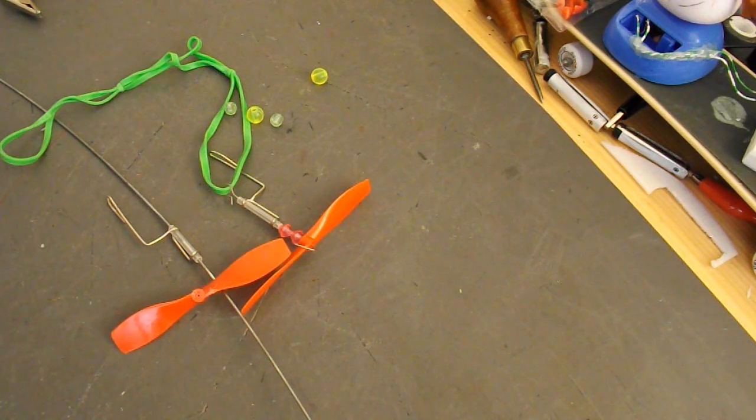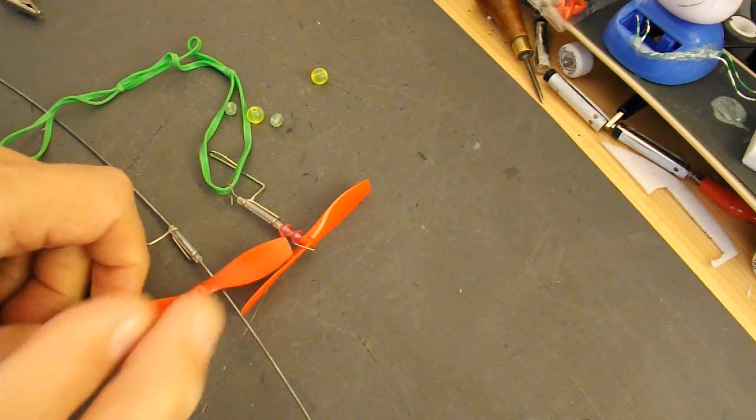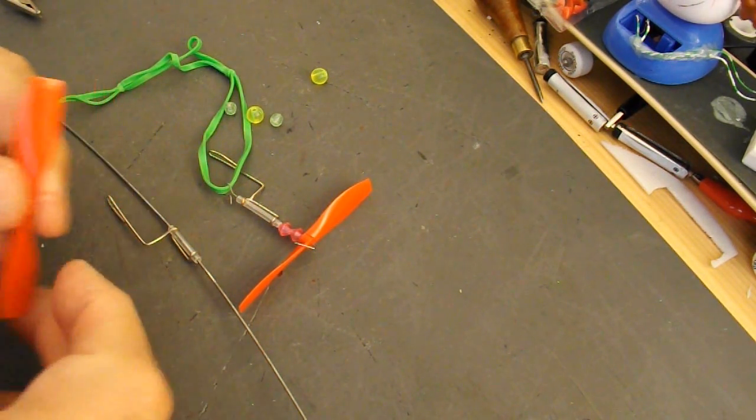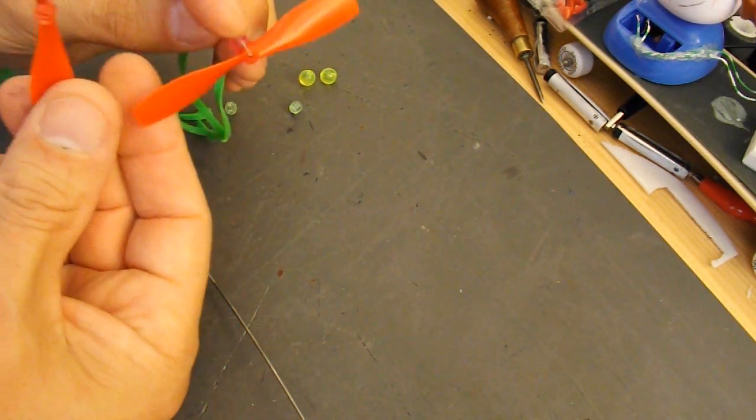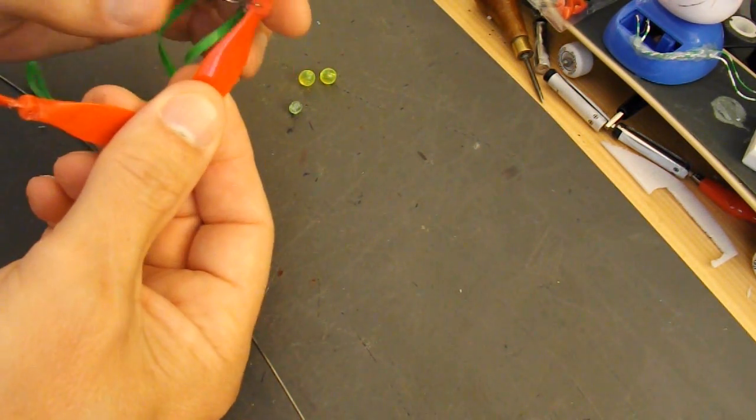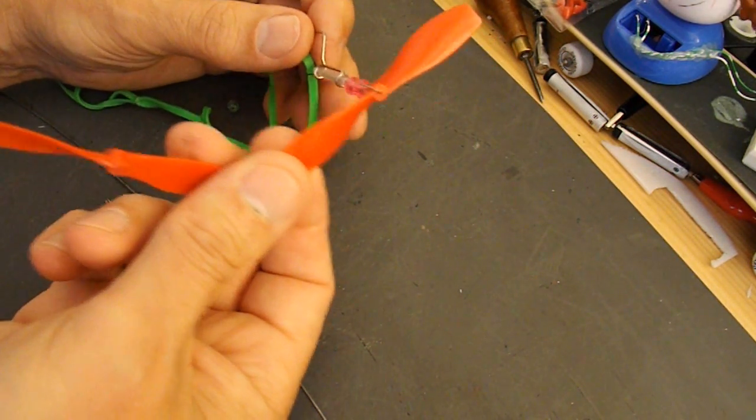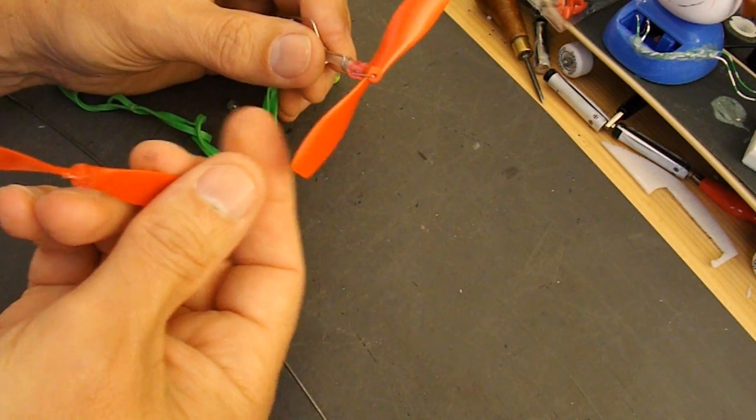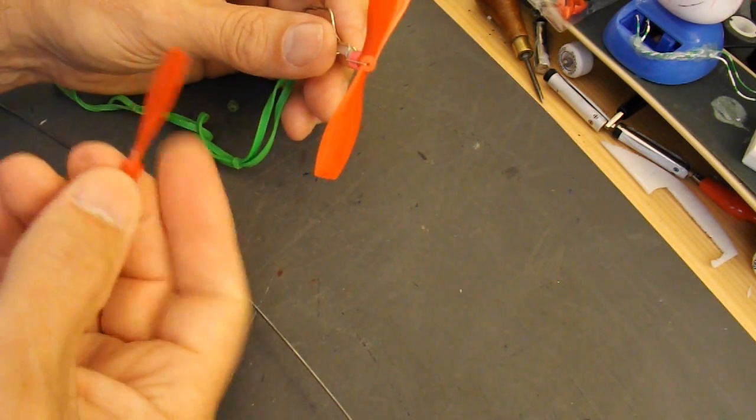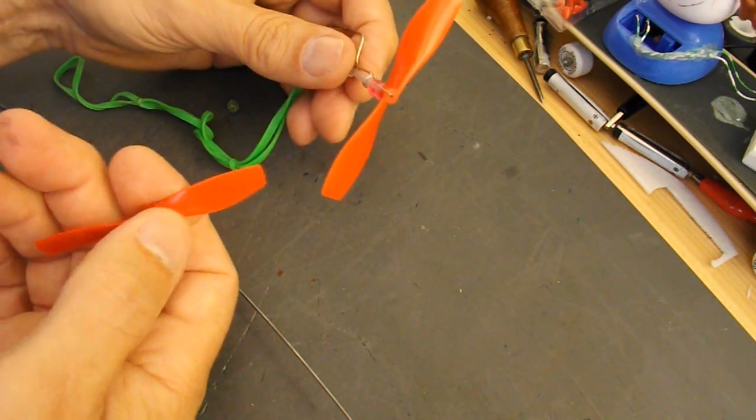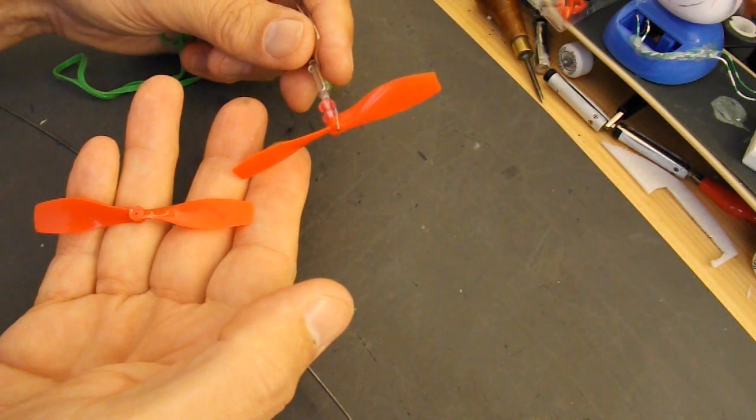One thing that does occur to me is I probably need three hands to do a launch with a twin-engined rubber band powered plane. Because how do you stop the propellers turning before you launch it? Unless you've got them close enough together to grip them both or something like that. I can't quite figure out how I'm going to do it. No doubt I'll find out when I do it. But I'll probably make quite a small plane with the propellers quite close together. Just so I've got a chance of trying to hold them before I launch it.